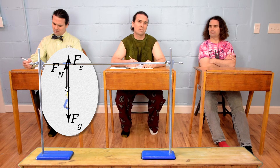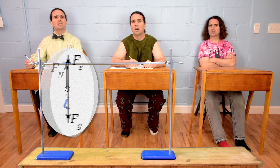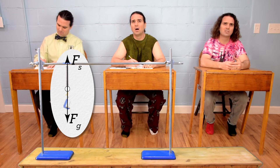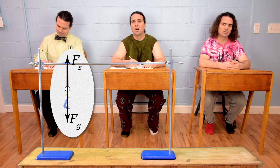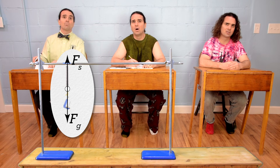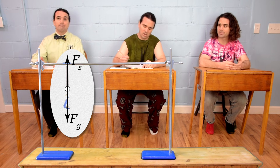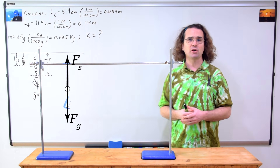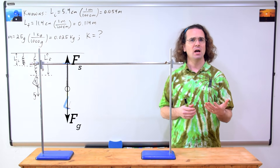What surface is causing the force normal? I guess there is no surface causing a force normal. So the only forces are the force of gravity down and the spring force up. Sorry. It's okay, we have the correct free body diagram now.